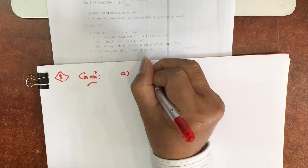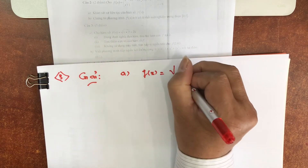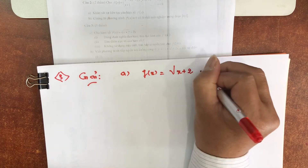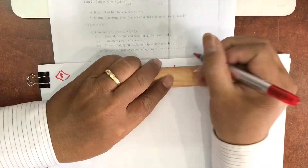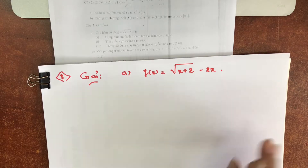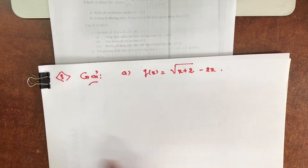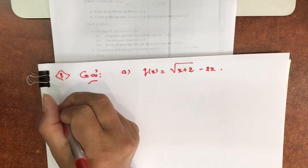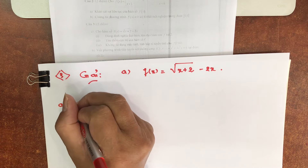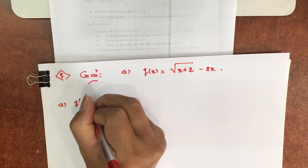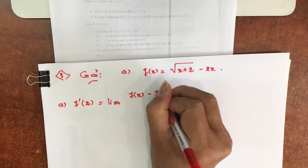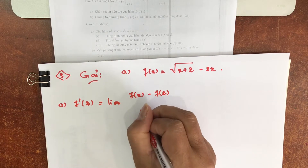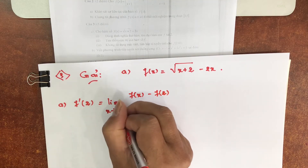Câu 2. Câu A: F(x) bằng căn bậc 2 của (x cộng 2) trừ đi 2x. Câu A là dùng định nghĩa đạo hàm, tìm đạo hàm của F tại 2. F'(2) bằng giới hạn của F(x) trừ F(2) chia x trừ 2 khi x tiến về 2.